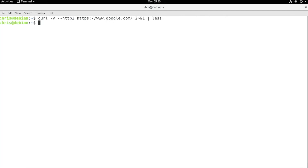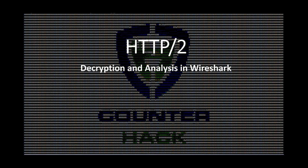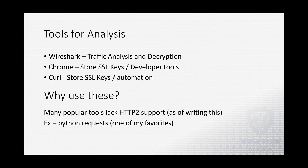Now Chris Davis will talk more about looking at the traffic in depth and decoding it in Wireshark. Hey, my name is Chris Davis. I'm going to show you how to decrypt and analyze HTTP 2 traffic in Wireshark. The tools we're going to be using are Wireshark, Chrome, and Curl. Wireshark does the traffic analysis and the decryption piece, while Chrome and Curl allow you to store SSL keys to be able to decrypt. The benefit of Chrome is you can interact with the website using developer tools. Curl can be used to help automate command line interaction — maybe you have an API that was HTTP 2 enabled and you needed to automate a task — and also store the SSL keys for debugging later.